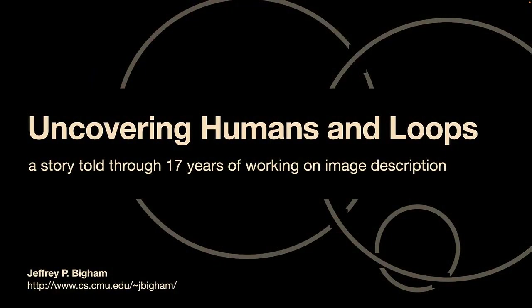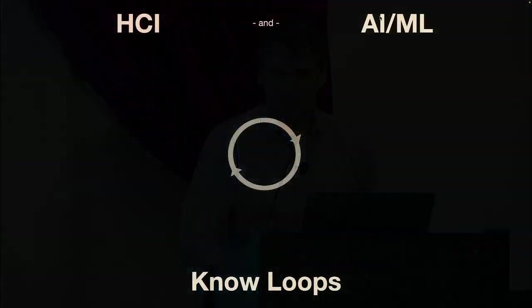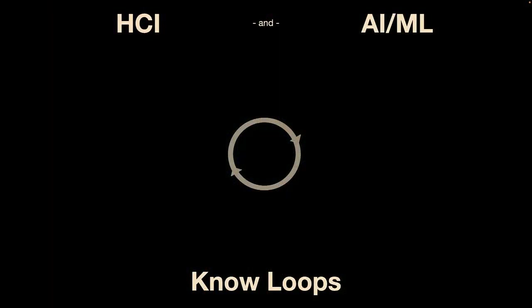Today I want to talk about this in the context of image descriptions, which Mary already introduced — tell you a bit about the journey, not only about convergence towards solutions, but also divergence in that pseudo-random path that we follow, and how it can help us uncover, re-remember, and better understand both the humans and the loops that we're enabling. So: loopy foundations. Both HCI and AI know loops, but sometimes we're talking about different things.